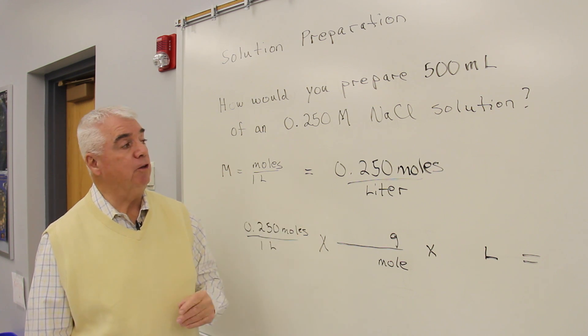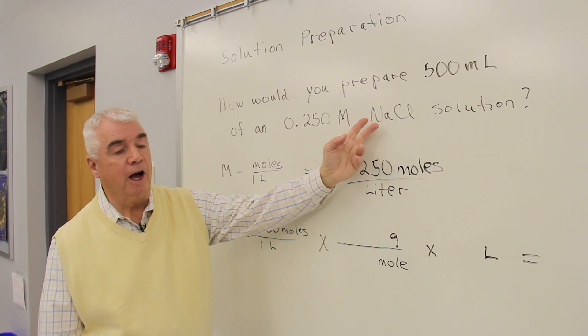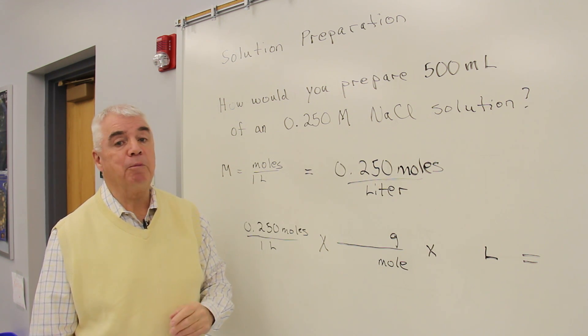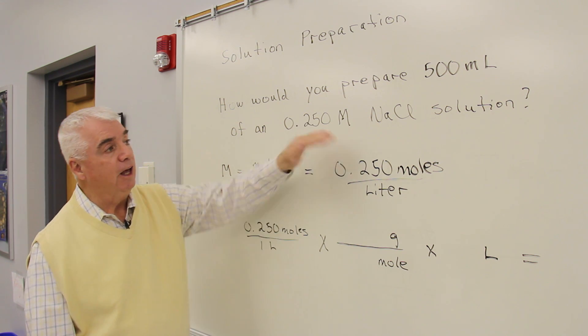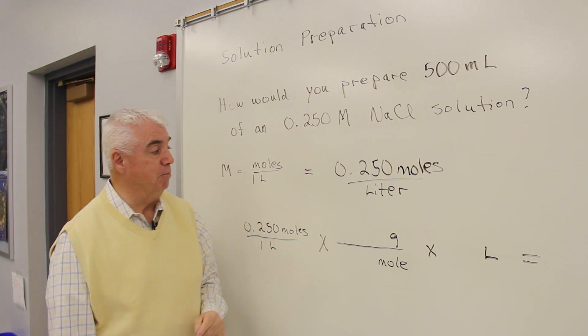How would you prepare 500 milliliters of a 0.250 molar sodium chloride solution? In other words, in the laboratory, we'd have a sample of sodium chloride. We'd really be interested in how many grams do we weigh out, and then we're going to dilute it up to 500 milliliters. So we're after grams.